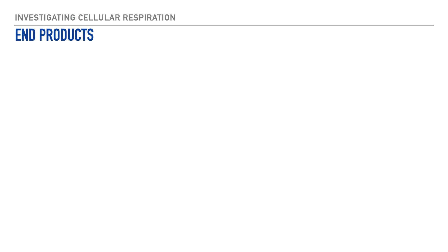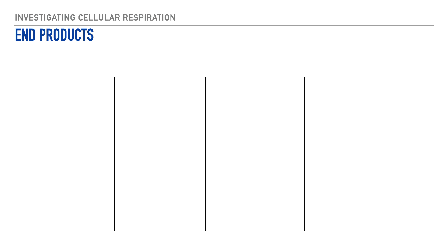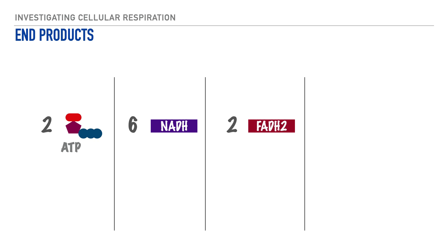The end products of the citric acid cycle — keeping in mind we had two pyruvate molecules enter — are two ATP, six NADH, two FADH2, and four molecules of carbon dioxide. Importantly, the citric acid cycle doesn't occur as a completely separate process; it's part of the larger cellular respiration pathway. Its products, NADH and FADH2, play a critical role in the electron transport chain and oxidative phosphorylation, where most ATP is generated.